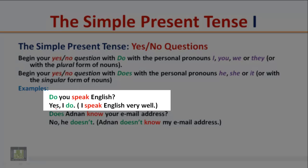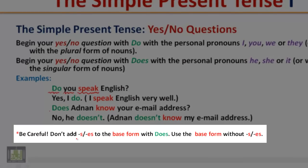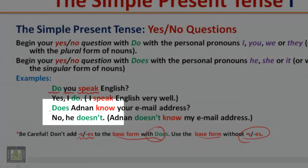Notice that in yes/no questions, we begin with the auxiliary verb, followed by the subject, followed by the base form of the verb. Be careful: don't add S or ES to the base form with 'does' — use the base form without S or ES. The base form of the verb is always used with the auxiliary 'does.'